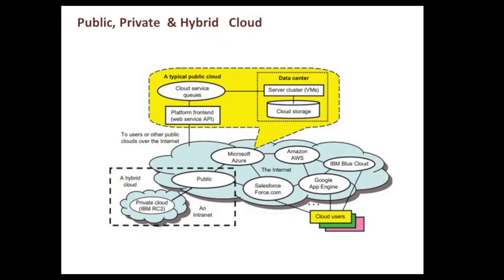We have a picture of public, private, and hybrid cloud. The public cloud includes Microsoft Azure, AWS, IBM Cloud, Google App Engine, and Salesforce.com. From this, we have formed a hybrid cloud — a combination of this public cloud and a private IBM RC2 cloud.